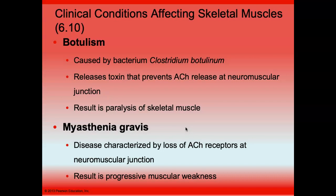Clostridium botulinum is also found just about everywhere, so you have to know how to can food properly. As this organism grows anaerobically inside the can, it releases a toxin that prevents acetylcholine from being released, causing paralysis. The muscle you worry about is the diaphragm — if you paralyze the diaphragm, you stop breathing. Myasthenia gravis is a progressive disease that destroys the acetylcholine receptors on the motor end plate of a neuromuscular junction.